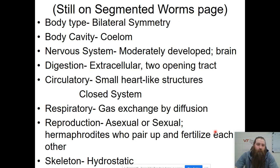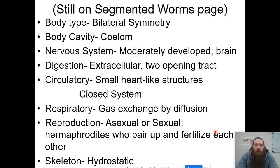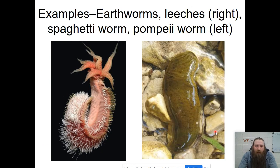They do undergo cephalization — they have a head with most of their senses concentrated in that area. They have a brain with a moderately developed nervous system. They have a two-opening digestive tract. Their circulatory system actually has a heart-like structure; it's a closed system with blood vessels. They still breathe by gas diffusion. Reproduction can be sexual or asexual, and these organisms typically have both male and female reproductive parts. Their skeleton is still hydrostatic.